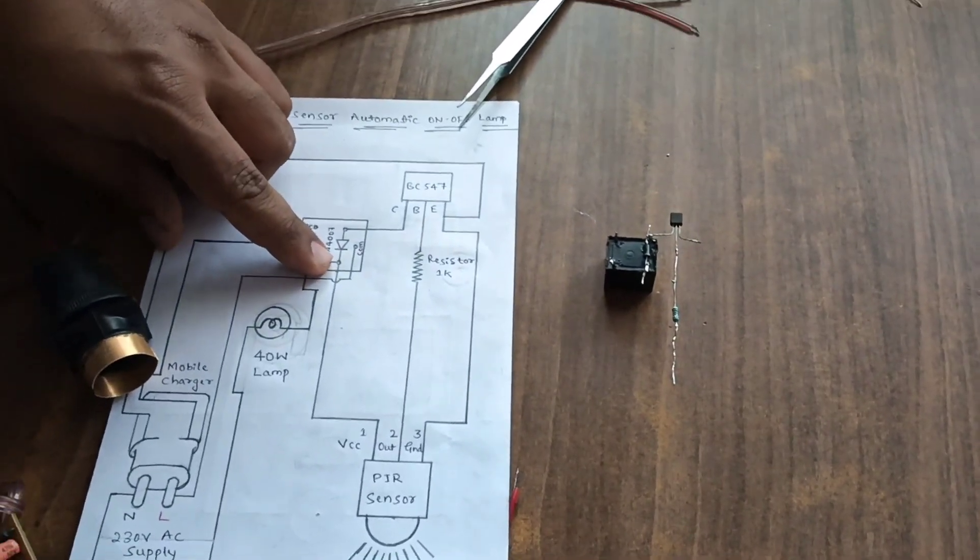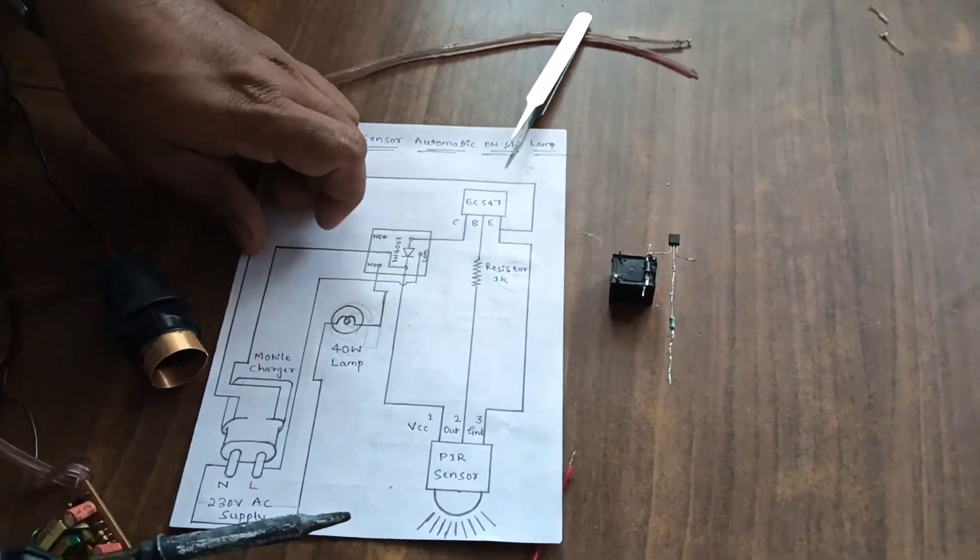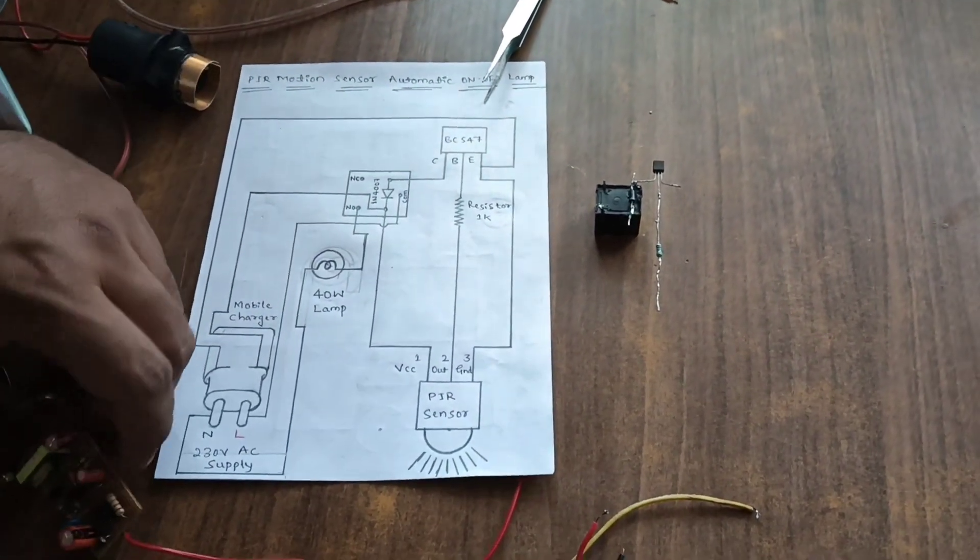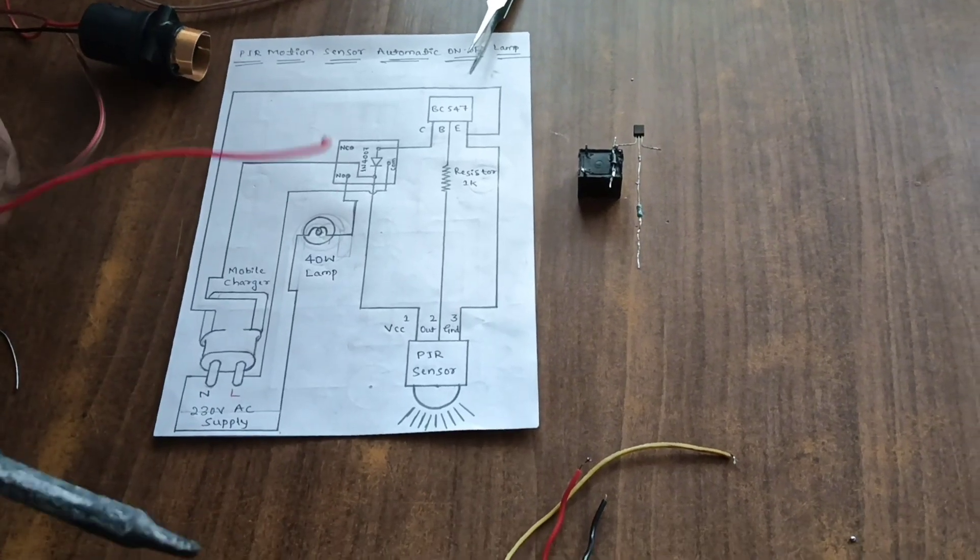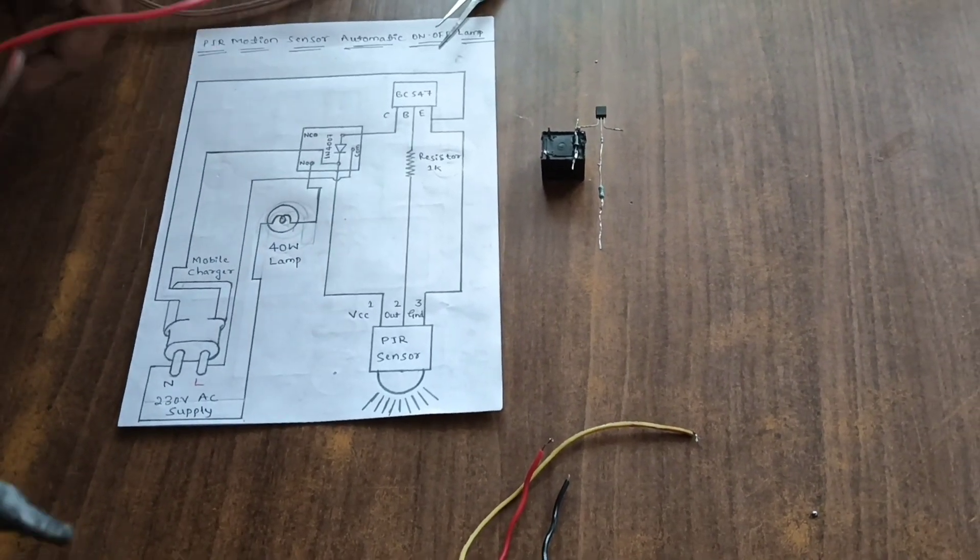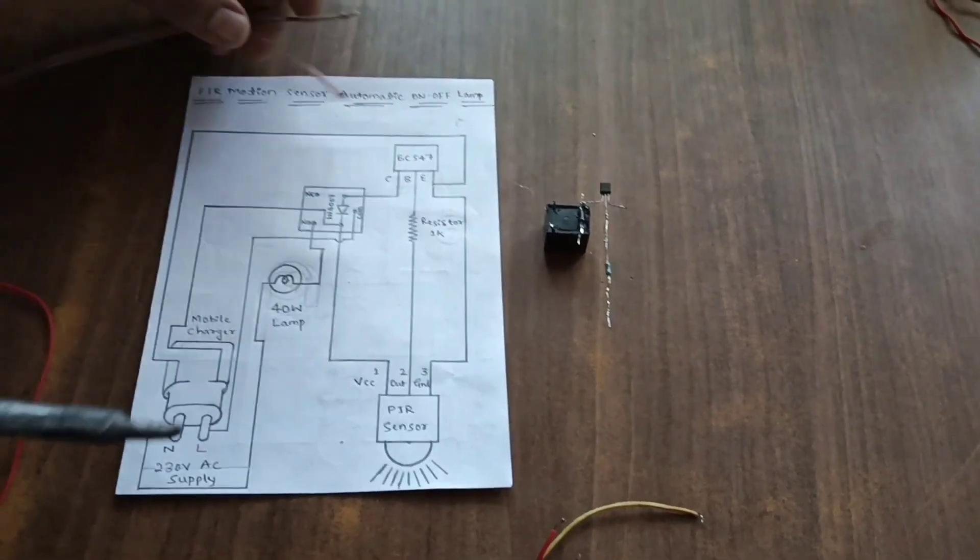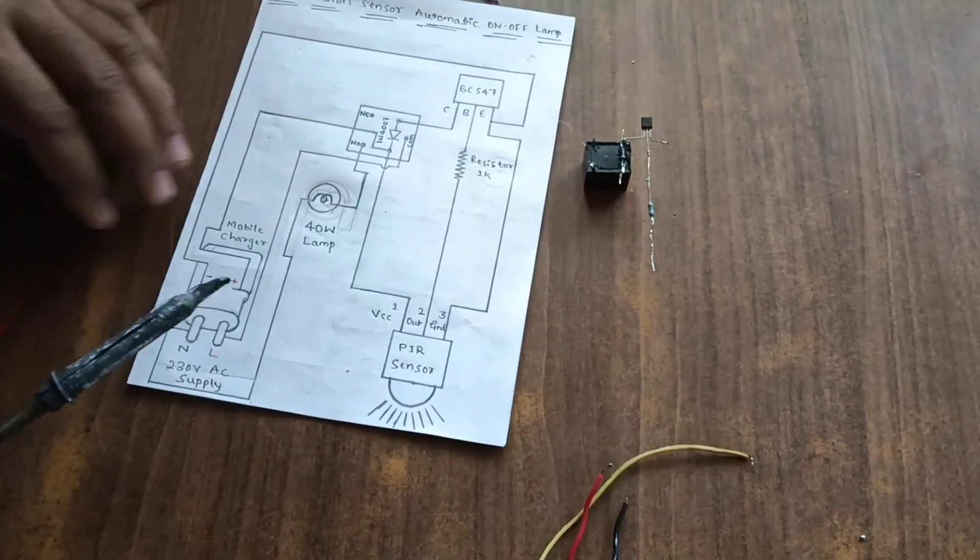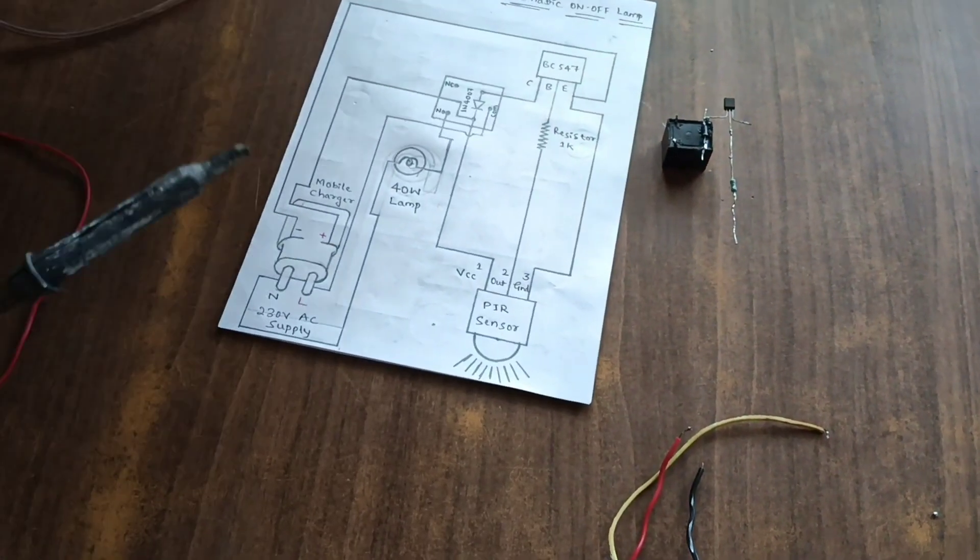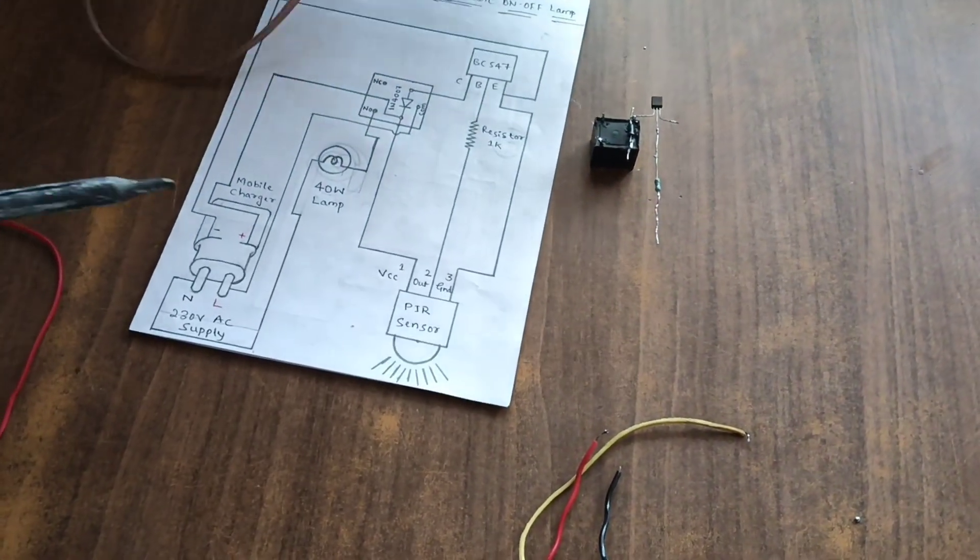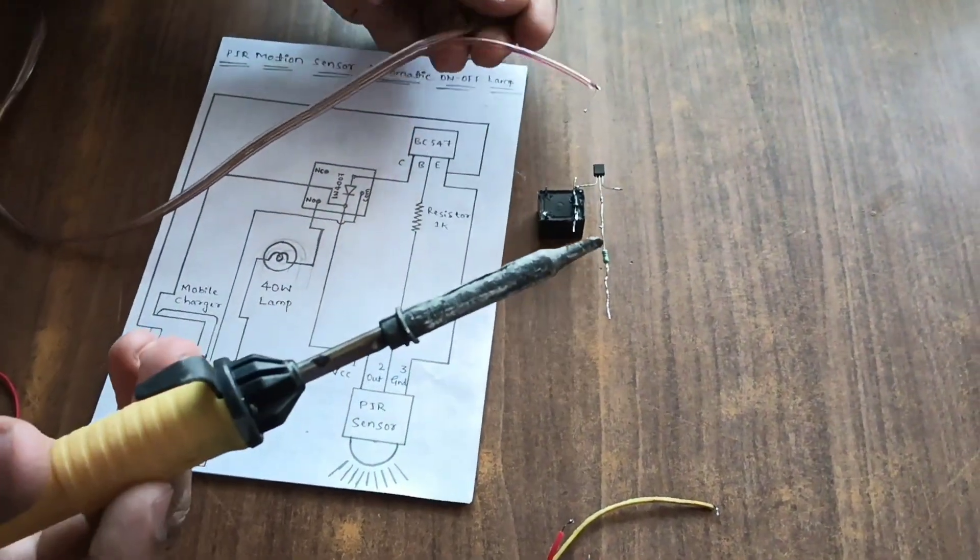Next, from cathode we connect mobile charger. Positive of the mobile charger output 5 volt is connected to cathode.